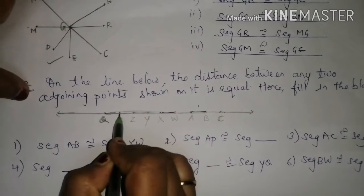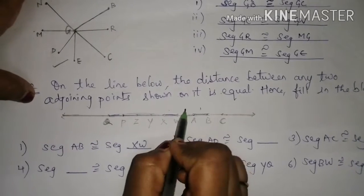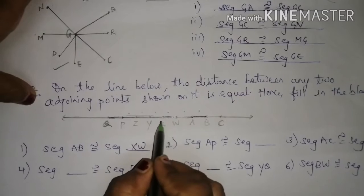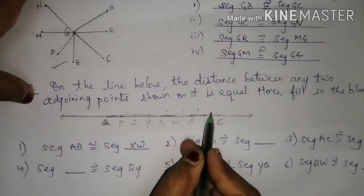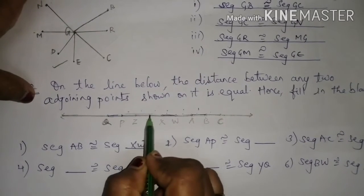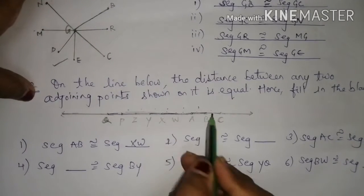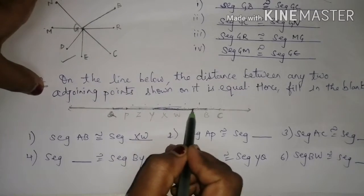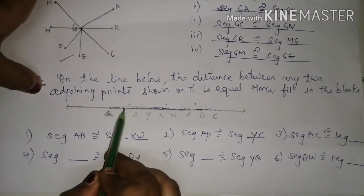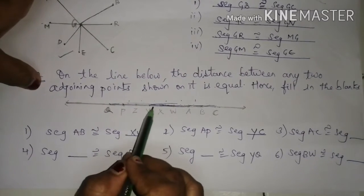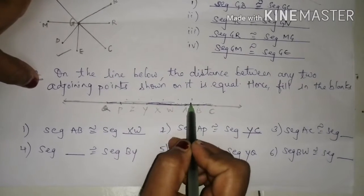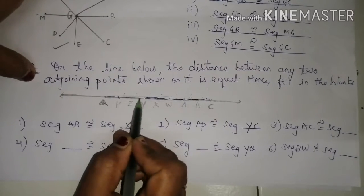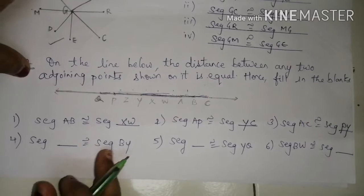Since AP is 5 units, you can take any two points 5 units apart — I will take Y to C: 1, 2, 3, 4, 5. So segment YC works. For segment AC: from A to C is 1, 2 — that is 2 units. So you can take any two points 2 units apart, such as XA or PY.